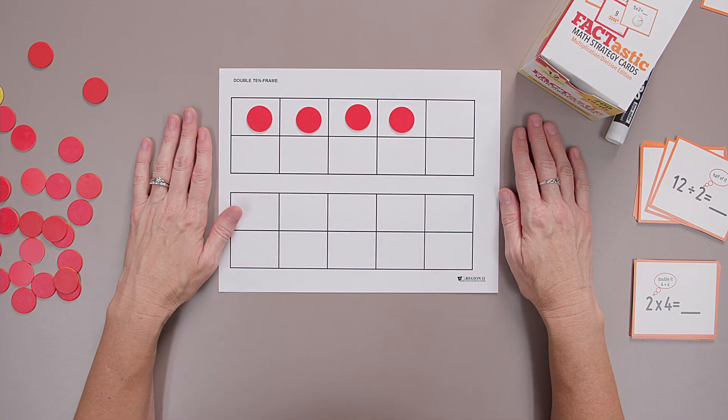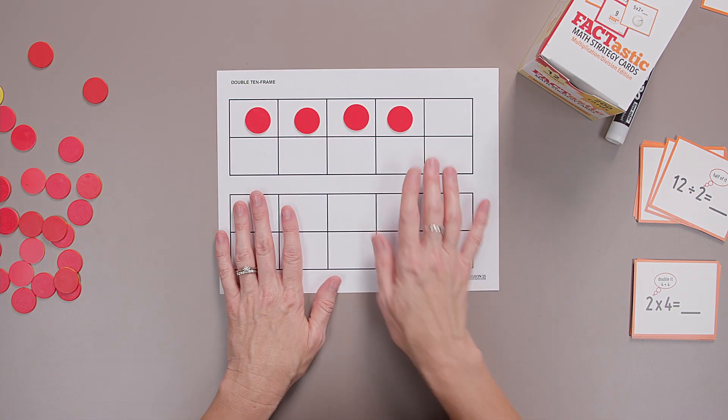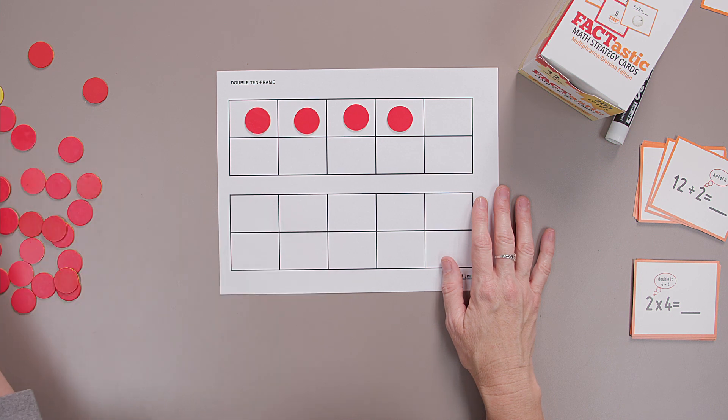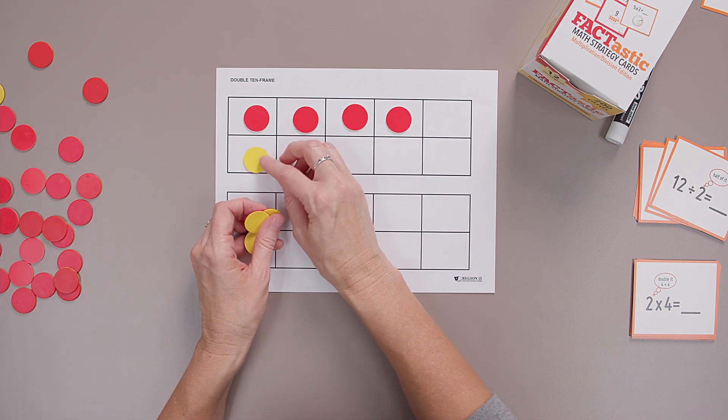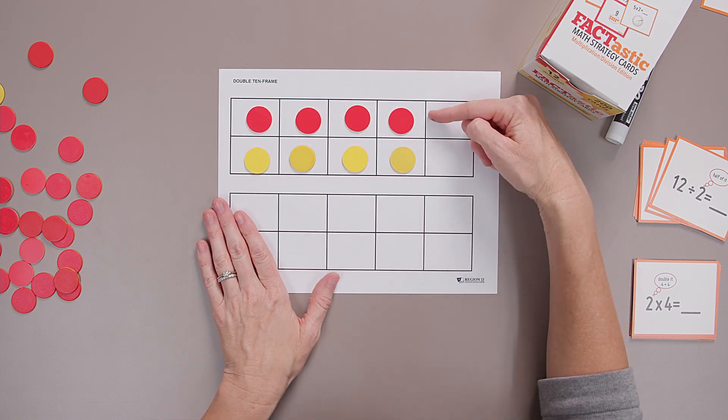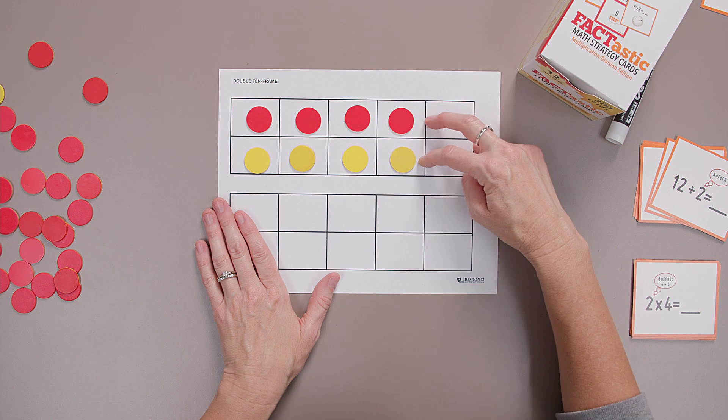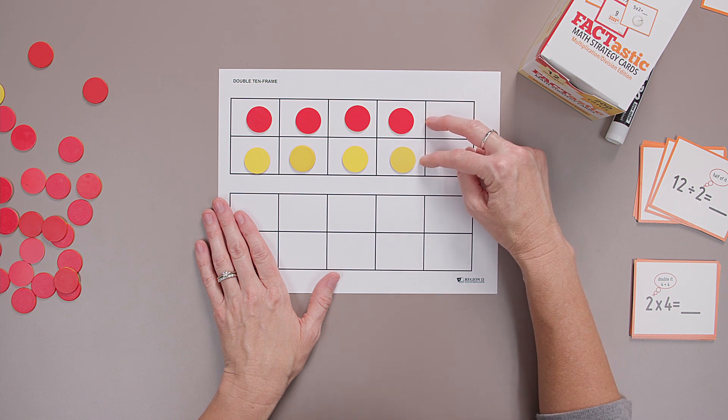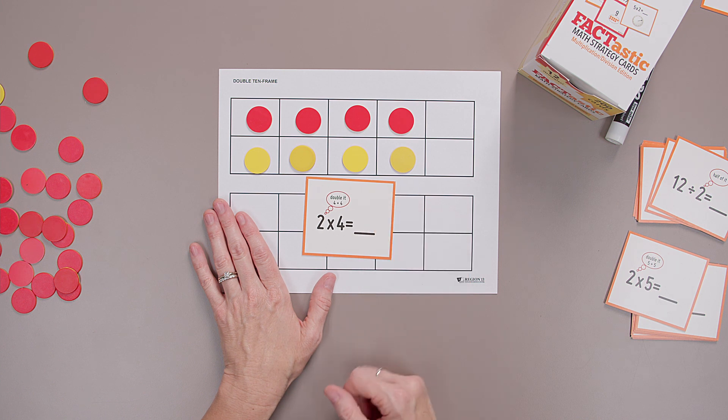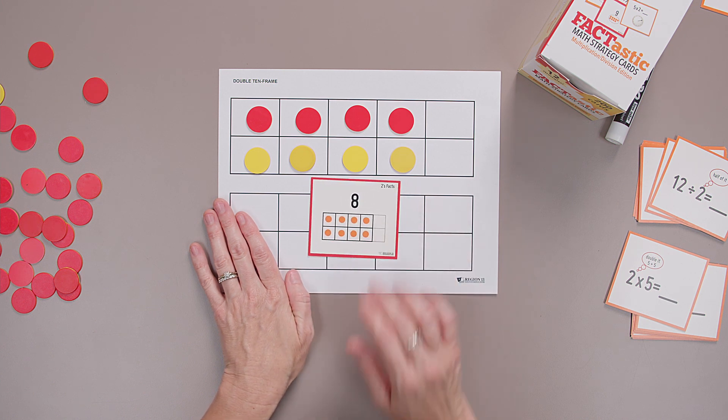So I'm going to build the number four on my 10-frame with my counters, and I want to double four. So to double four, I'm just going to add four more. And now I have four red, four yellow. Four and four is eight. We know that four and four is eight. Two times four is eight. We just doubled four.